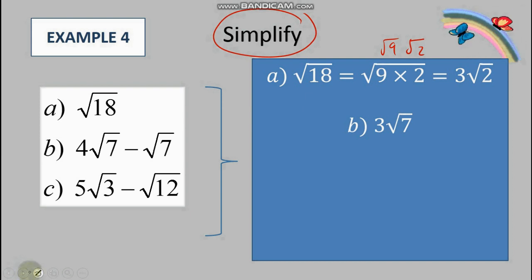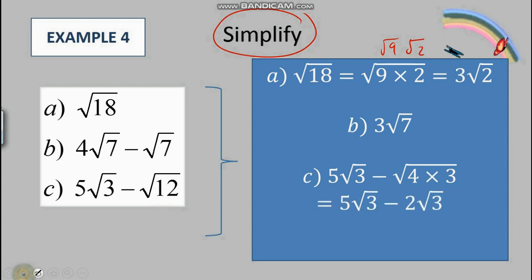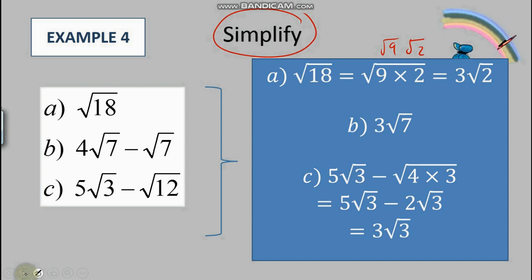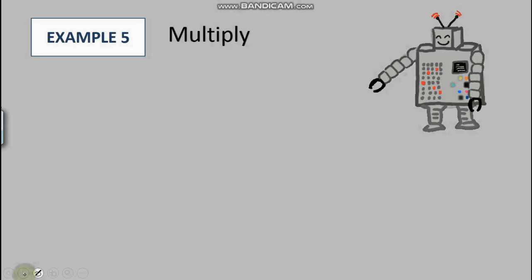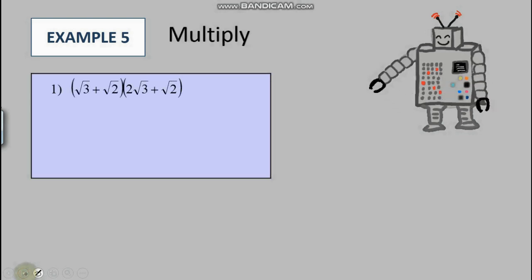What about 5√3 + √12? The √12 can be simplified: √12 = √4 × √3 = 2√3. So we can separate them out, giving us 5√3 + 2√3 = 7√3. As agreed before, we can separate the surd, so the answer is 7√3.